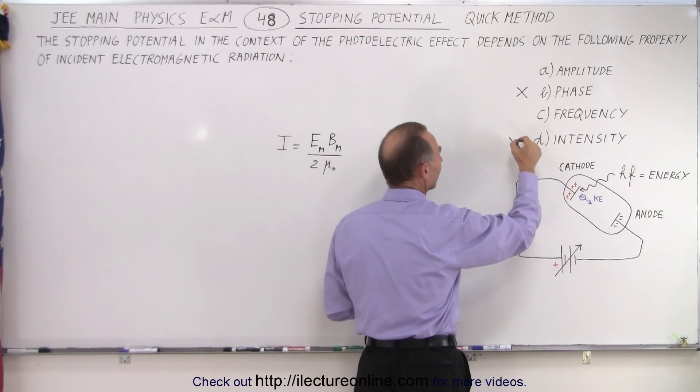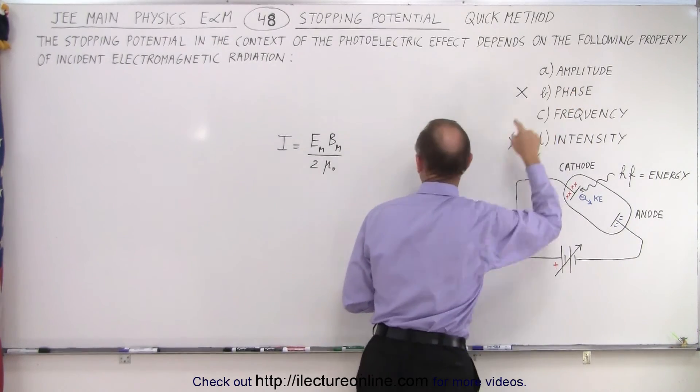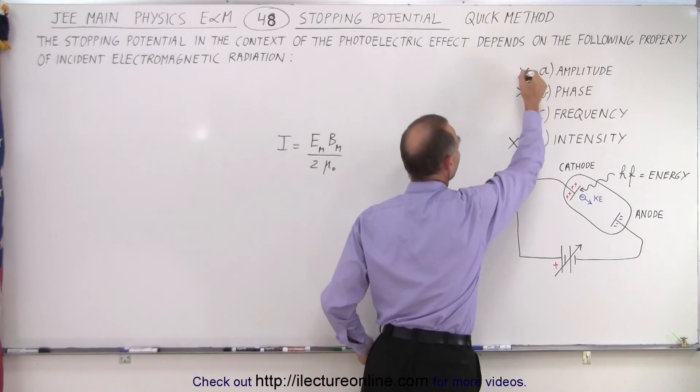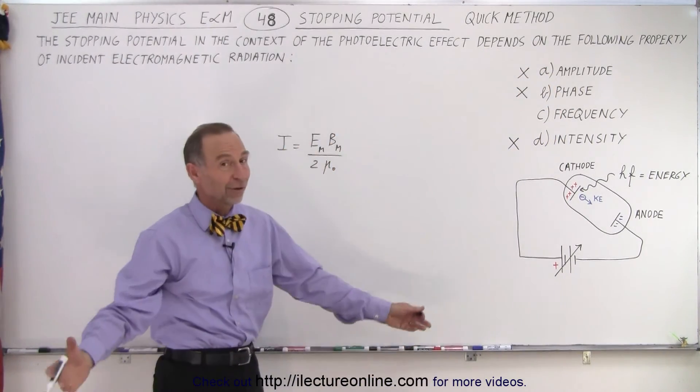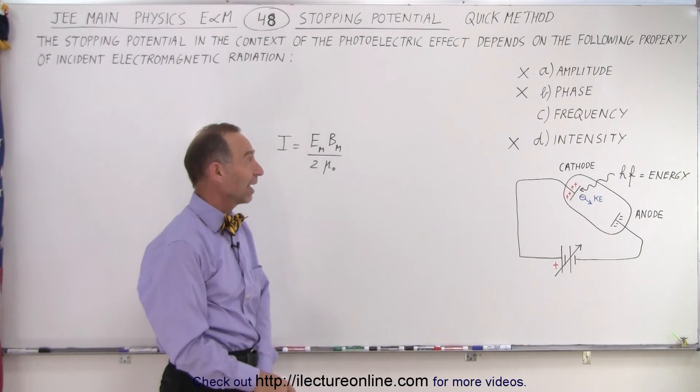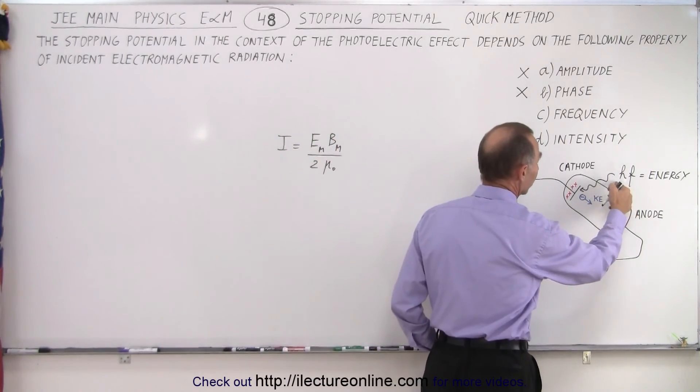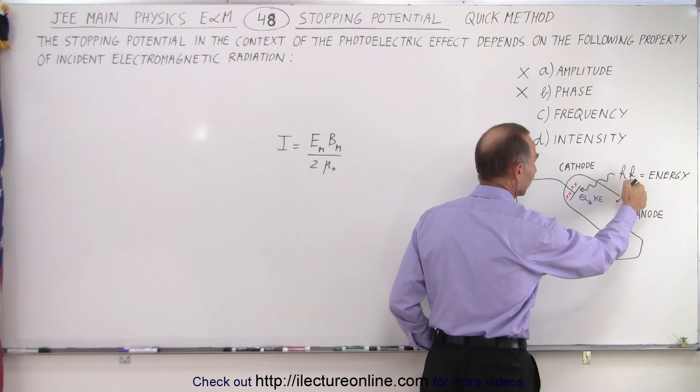So it cannot be intensity, and we know that the amplitude is proportional to the intensity, so therefore it can also not be the amplitude. Which only leaves one possible answer that can be correct. And then you realize that the energy contained within a single photon is always equal to Planck's constant times the frequency.